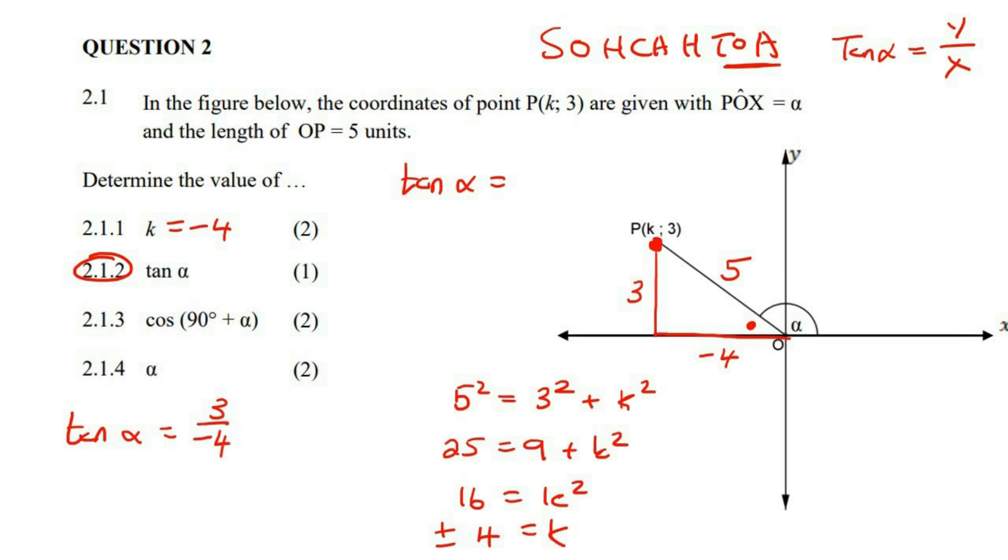Over negative 4. Now some learners want to then carry on and use shift and all of that. But remember, if you use shift now, then what you are determining is the angle alpha, but they didn't ask you for the angle alpha, that's only in this question. Here they are literally just asking you for tan alpha. So you leave it there, that's the answer. It's 3 over negative 4.